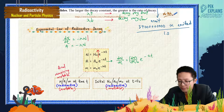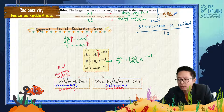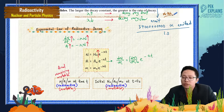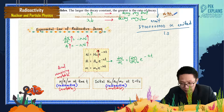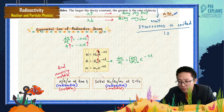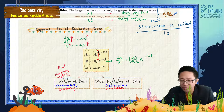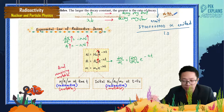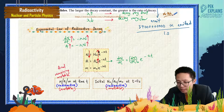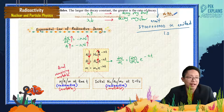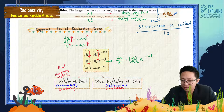When you have a lot of sample, you have a high rate of decay. But after some time, most of the unstable nuclei have already decayed and become stable. The number of remaining unstable nuclei has decreased, so the activity also becomes less after some time. They are all proportional.